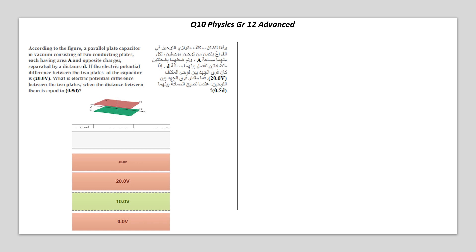Here we are with question 10 for grade 12 advance. According to the figure, a parallel plate capacitor in vacuum consisting of two conducting plates, each having an area A and opposite charges, separated by distance D.